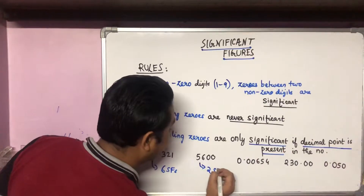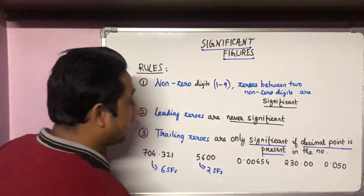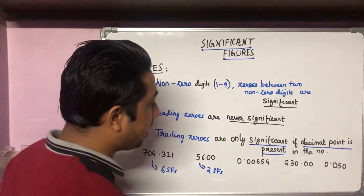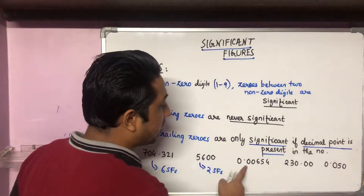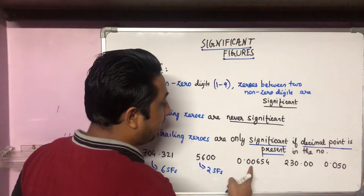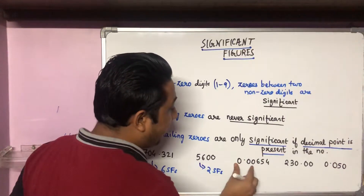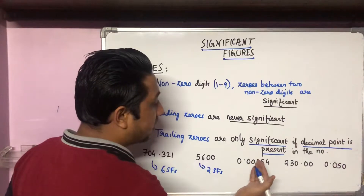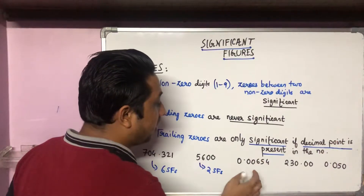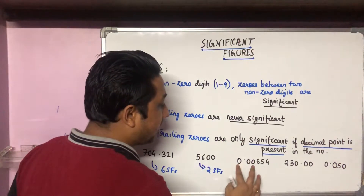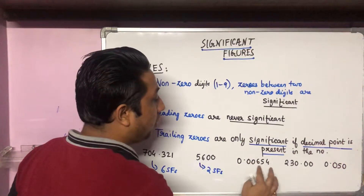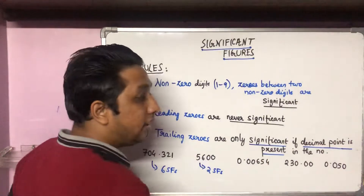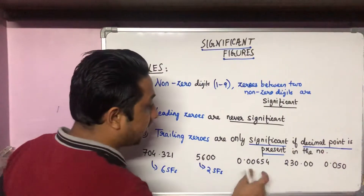0.00654 — here we have three leading zeros at the start of the number. Leading zeros are never regarded as significant, so we consider only six, five, and four — these three digits are significant because they are nonzero. So we have three significant figures.